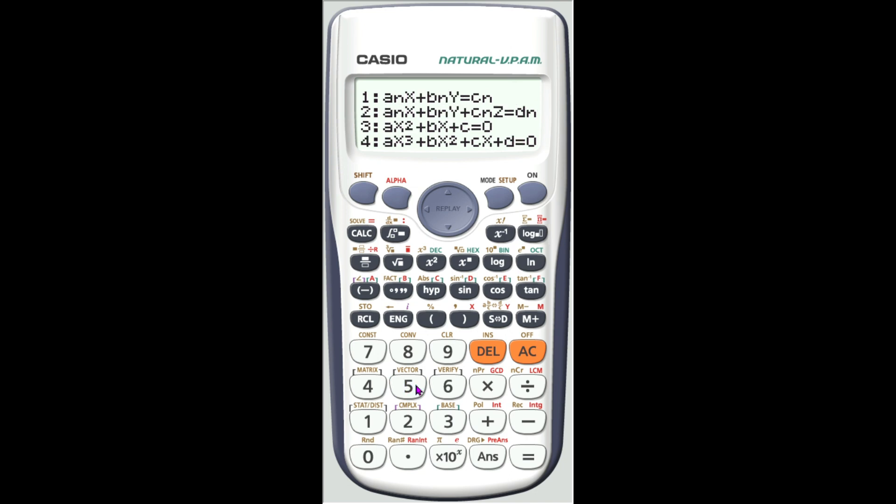After pressing 5, you will be shown this interface. The first two functions are for simultaneous equations, which would be ideal when you are finding two unknowns given two or three equations. But we are not interested in that. So, we will be using either 3 or 4.